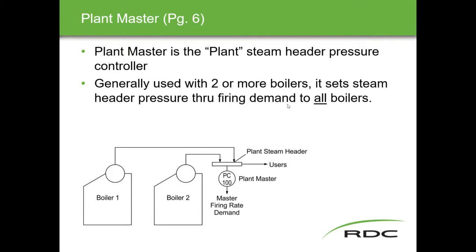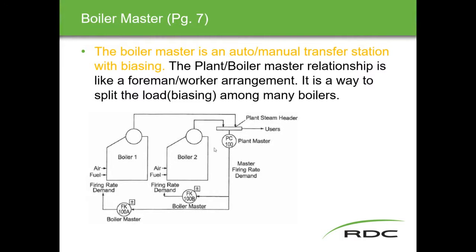The plant master dictates the master firing rate, setting the steam header pressure through firing demand to all the boilers. In comparison, a boiler master is added for each individual boiler. The boiler master is an auto-manual transfer station with biasing, which means you can turn boilers on and off as you wish and bias them — preloading how much you want each to contribute to the overall plant steam header. For example, you could preset one boiler at 25% and another at 100%.